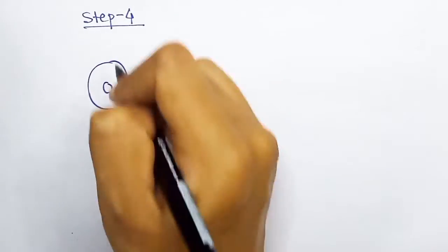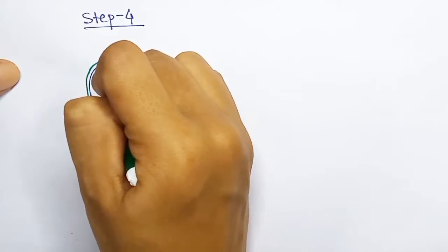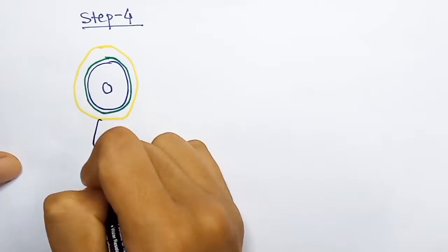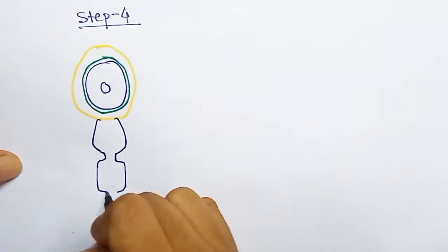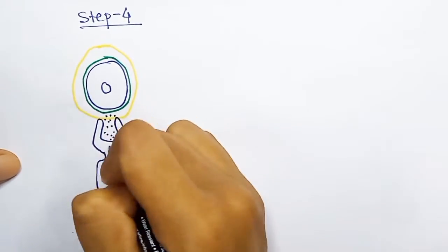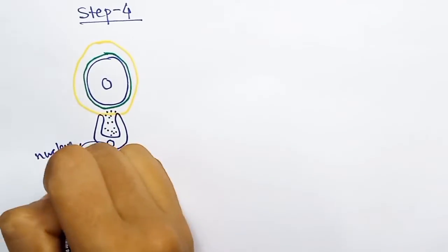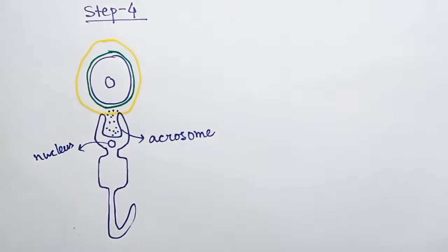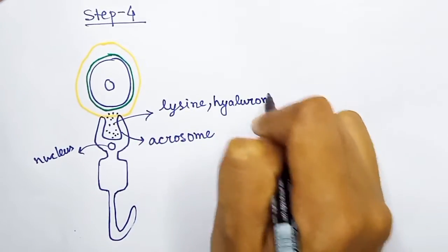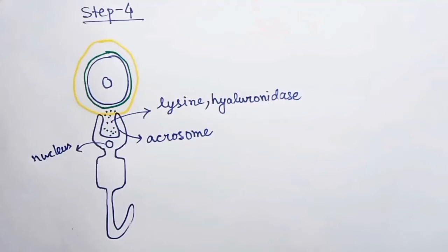So in the fourth step, the acrosomal material will be released from the sperm. The acrosomal material contains some chemicals which will digest the egg jelly layer. These chemicals include lysin, hyaluronidase, etc. These chemicals will digest the egg jelly layer of the egg.